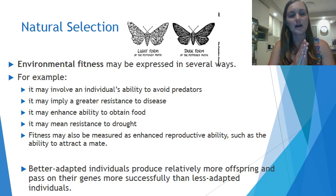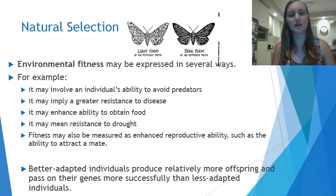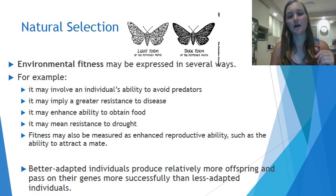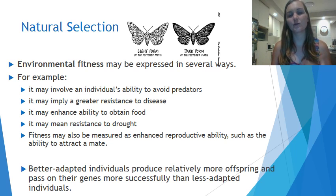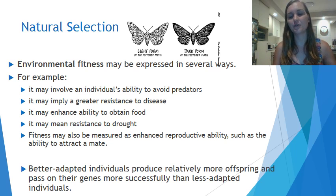When talking about fitness, this means environmental fitness — it can be expressed in many ways. It means being very well adapted to survive in your environment. For example, it may mean the organism is very able to avoid predators, or it may imply greater resistance to disease, enhanced ability to obtain food, resistance to drought, or enhanced reproductive ability such as attracting a mate. Better adapted individuals produce relatively more offspring and pass on their genes more successfully than less adapted individuals.